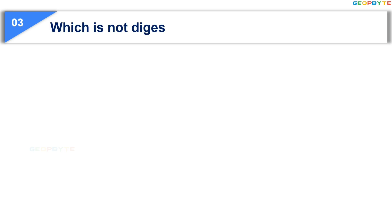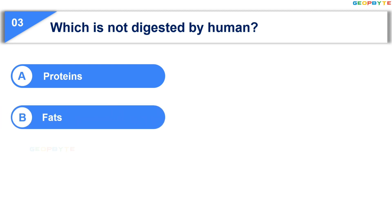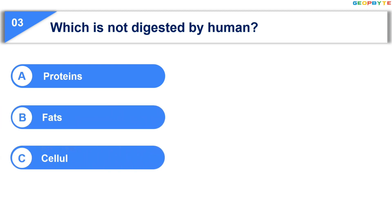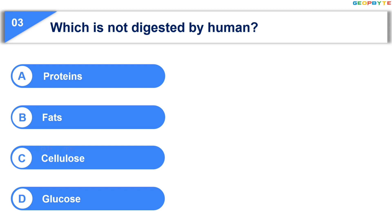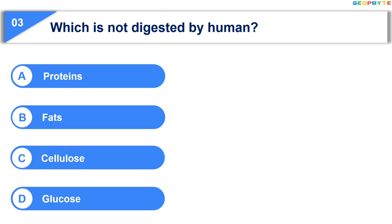Now let us see the third question: which is not digested by humans? Option A: proteins; Option B: fats; Option C: cellulose; Option D: glucose. Your time is up and the correct answer is Option C: cellulose.